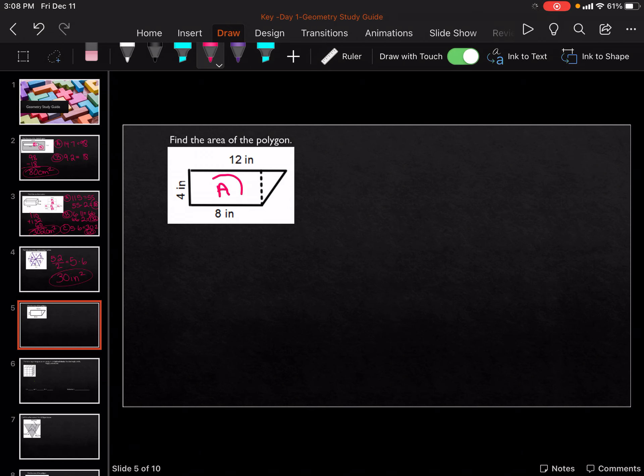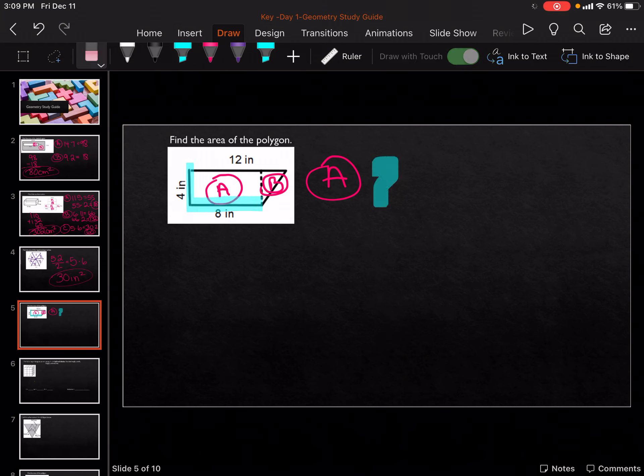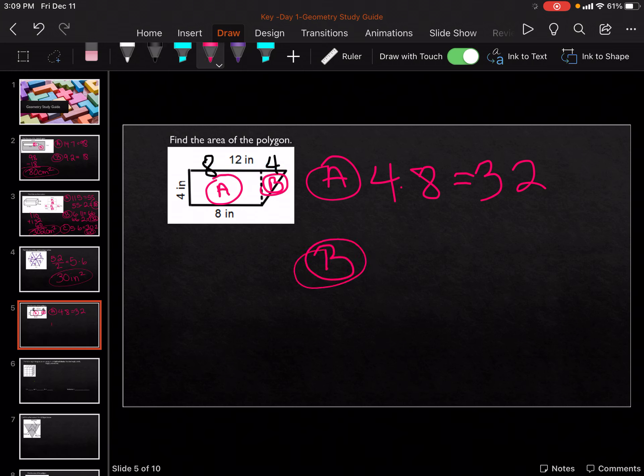For this one, we've got A, and we've got B. For A is 4 times 8. Gets me 32. And then let's look at B. For B, the whole length across the top is 12. The left side is 8, so the leftover is 4. So it's going to be, for B, 4 times 4 divided by 2. 4 times 4 is 16, divided by 2 is 8. 32 plus 8 is 40 inches squared.